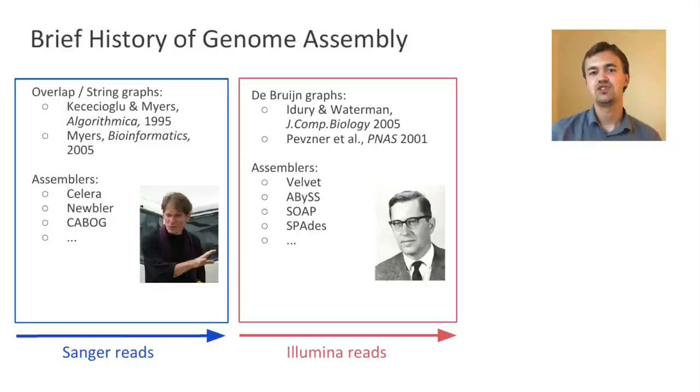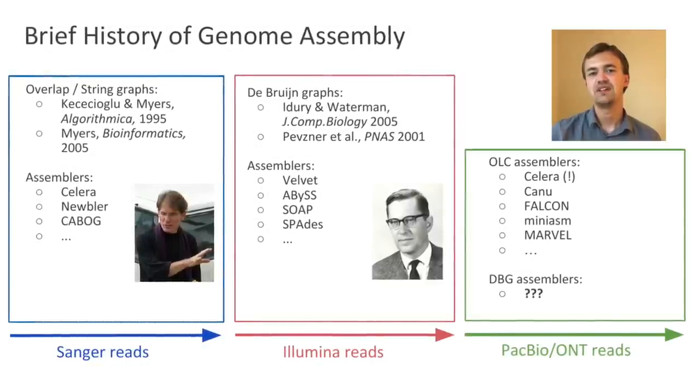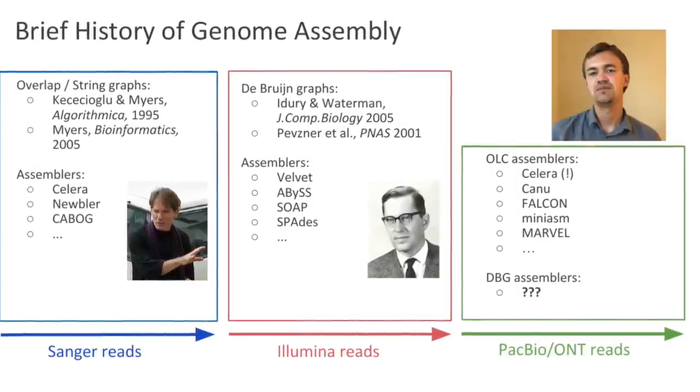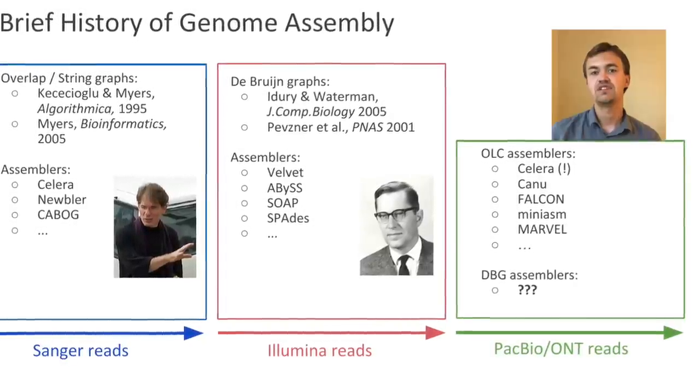Later in the second generation sequencing era, machines started to produce massively parallel reads and it turned out that computing all versus all overlaps is very expensive. So the de Bruijn graph approach appeared as an alternative and gave rise to many new assemblers such as Velvet or ABySS or SPAdes. And now we are entering the new long read sequencing era. A few overlap layout consensus assemblers have been implemented and de Bruijn graph assemblers are somehow lagging. In this work we will attempt to fill this gap.